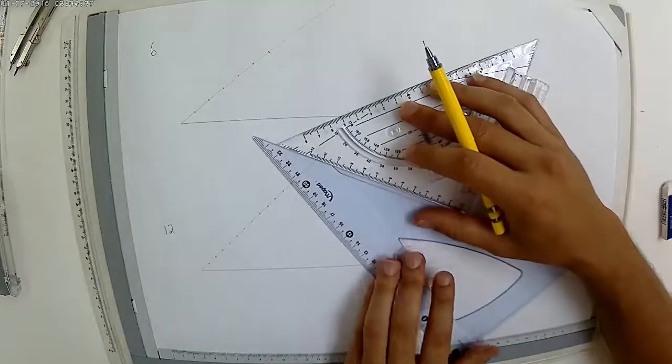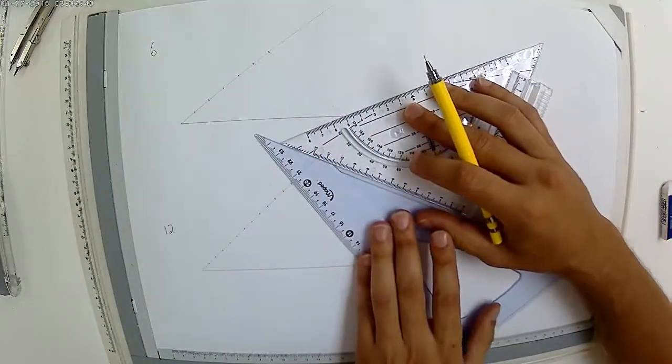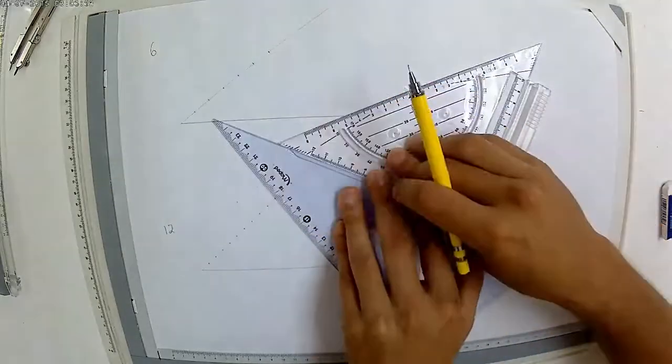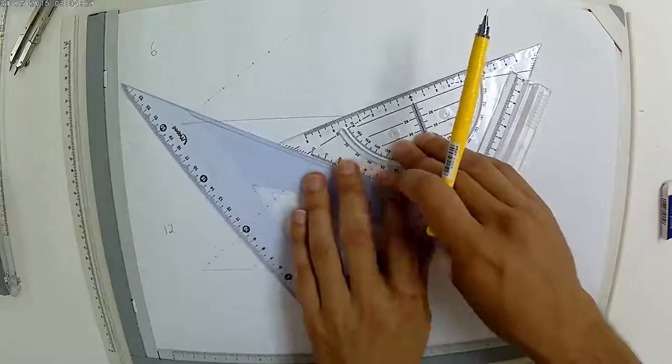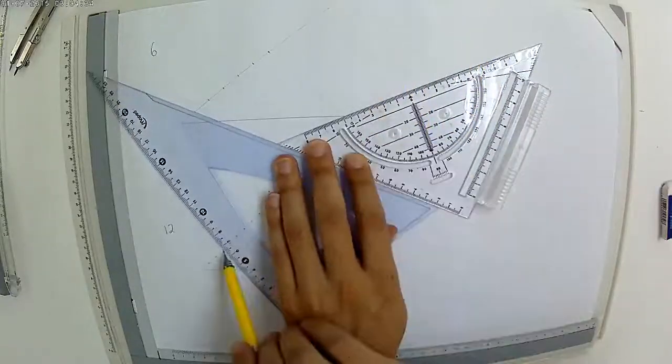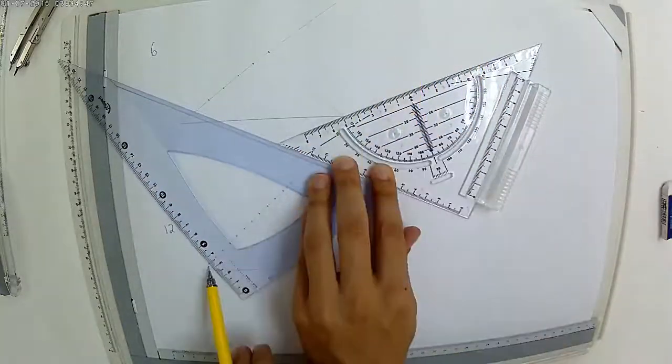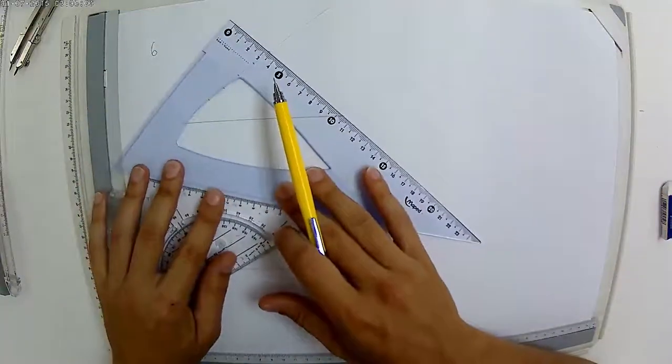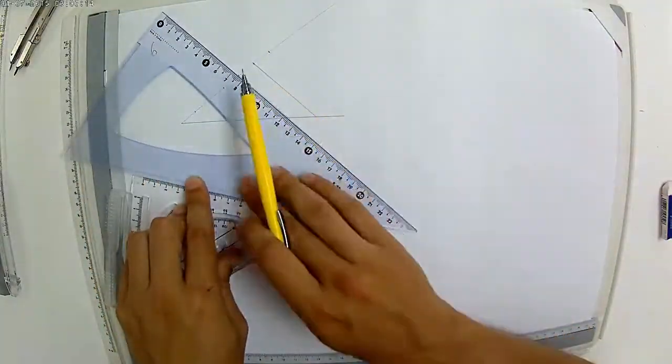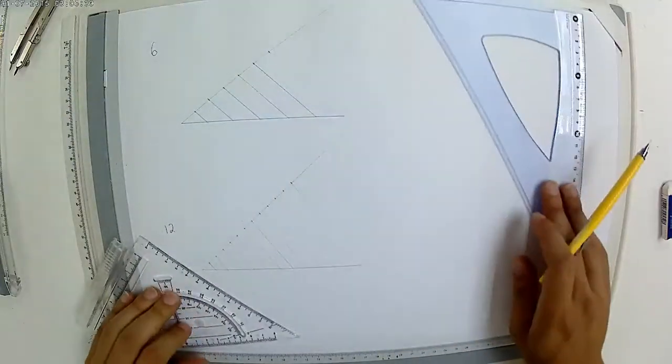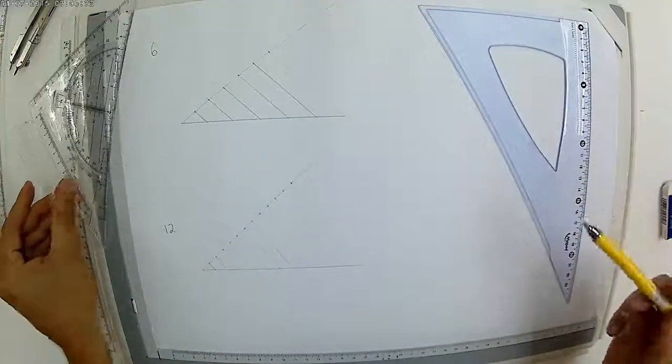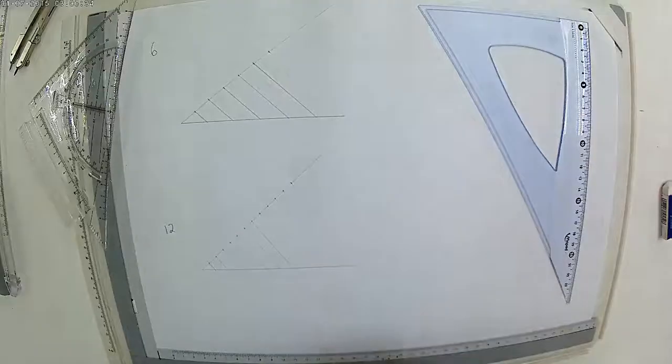Let's quickly put in all these parallel lines. Alright, and that is how you divide a line using construction.